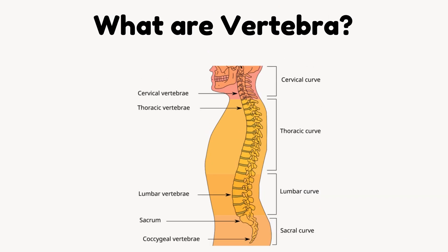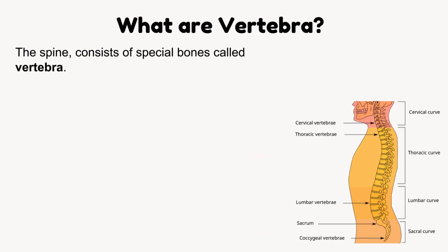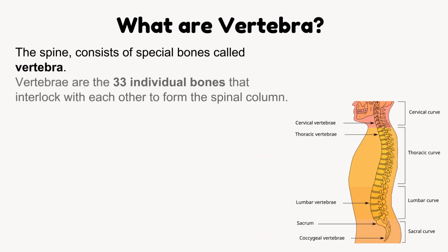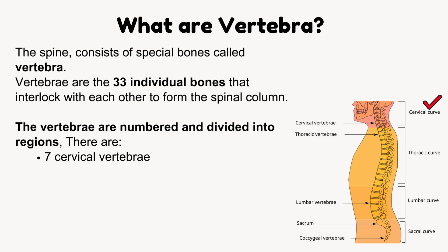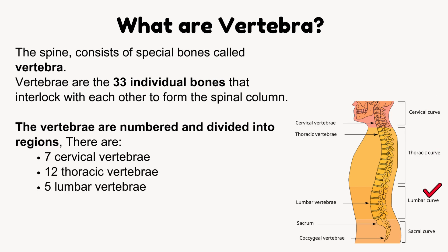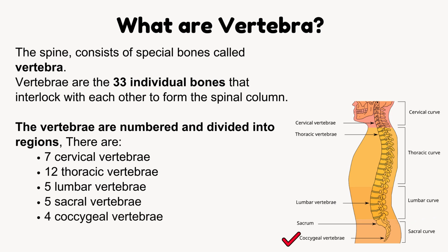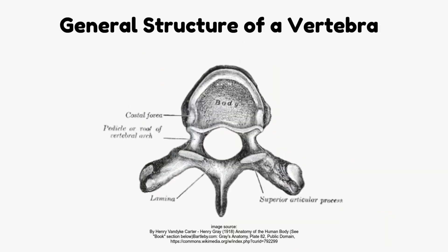What are vertebrae? The spine consists of special bones called vertebrae — 33 individual bones that interlock with each other to form the spinal column. The vertebrae are numbered and divided into regions: 7 cervical vertebrae, 12 thoracic vertebrae, 5 lumbar vertebrae, 5 sacral vertebrae, and 4 coccygeal vertebrae.